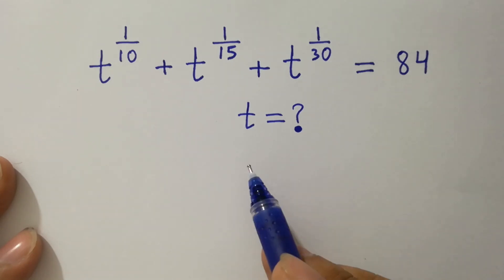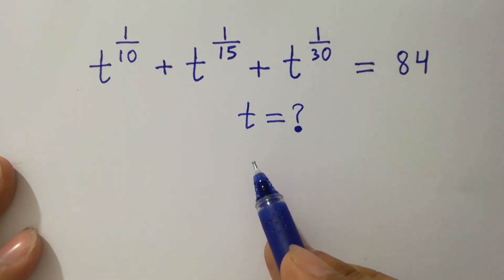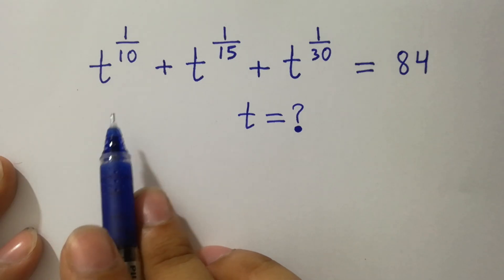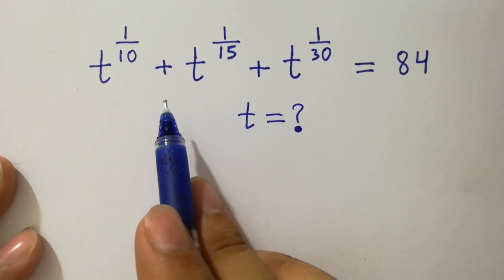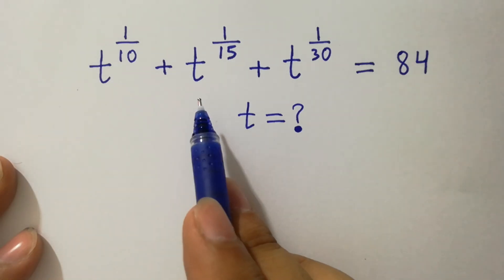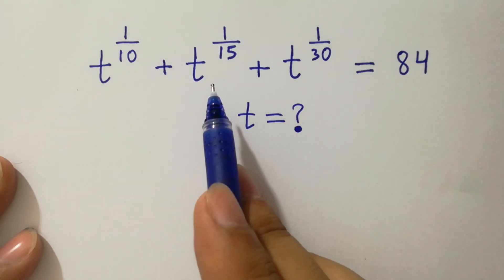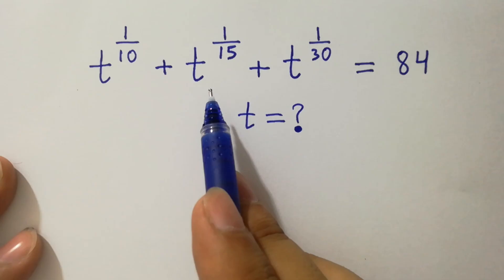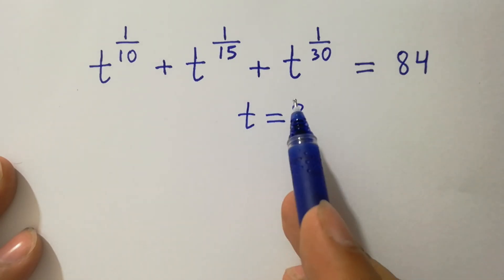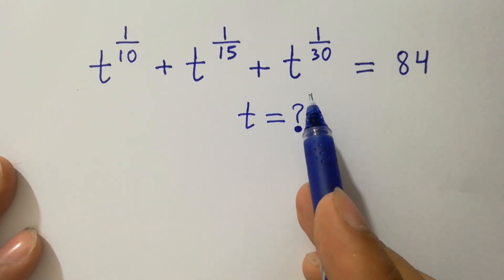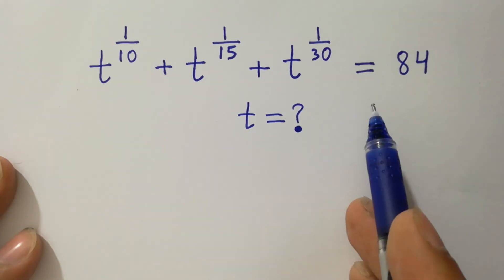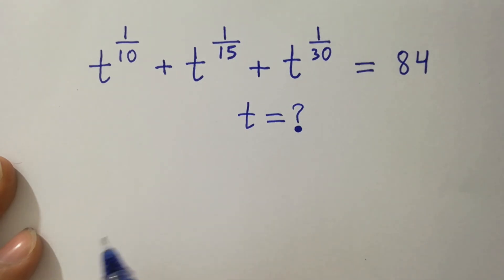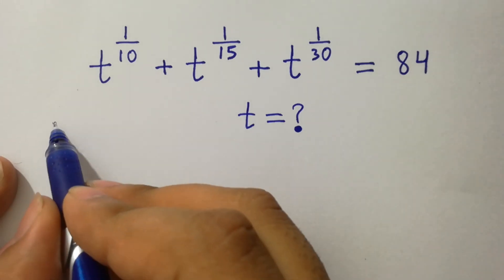Hello friends! Find the value of t if t to the power 1 over 10 plus t to the power 1 over 15 plus t to the power 1 over 30 equals 84. Let's have a solution.